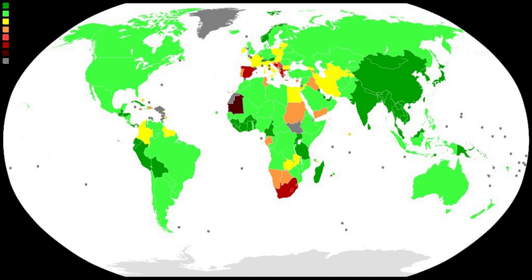For purposes of comparison, harmonized values are published by the International Labor Organization and by the OECD. The ILO Harmonized Unemployment Rate refers to those who are currently not working but are willing and able to work for pay, currently available to work, and have actively searched for work. The OECD Harmonized Unemployment Rate gives the number of unemployed persons as a percentage of the labor force.